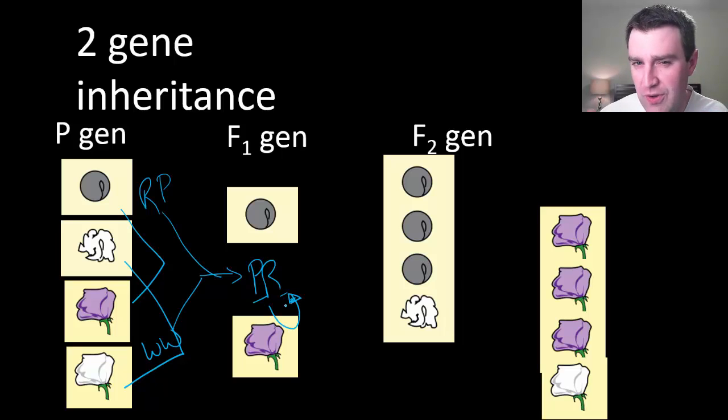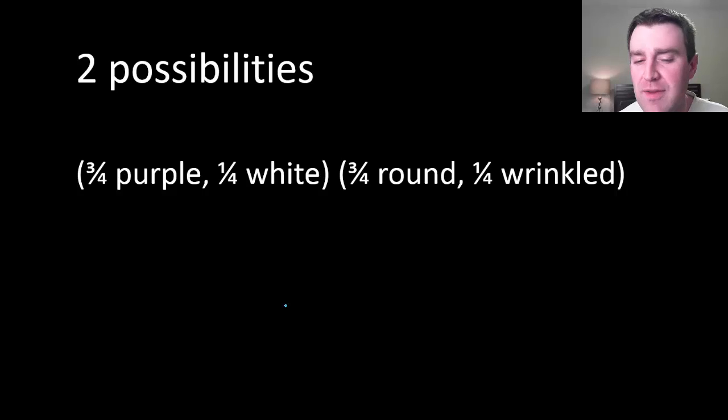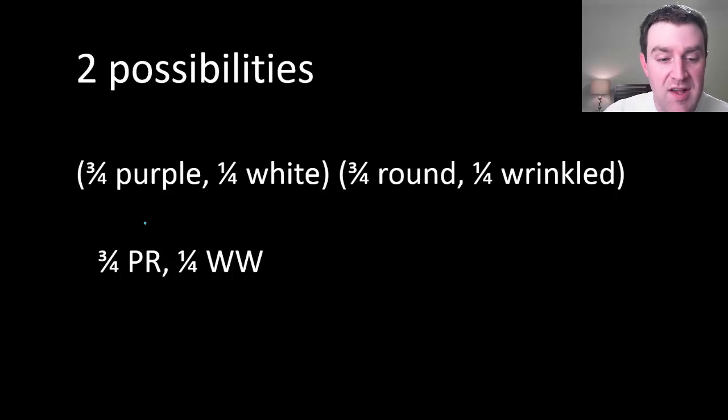What he was really interested in is what happens if you self-pollinate that plant? How does it work when you cross two genes at the same time? He reasoned there might be two possibilities here. One possibility is that maybe the dominant alleles from that doubly dominant parent have to stick together. So maybe you just get the same three-fourths, one-fourth result from single gene experiments.